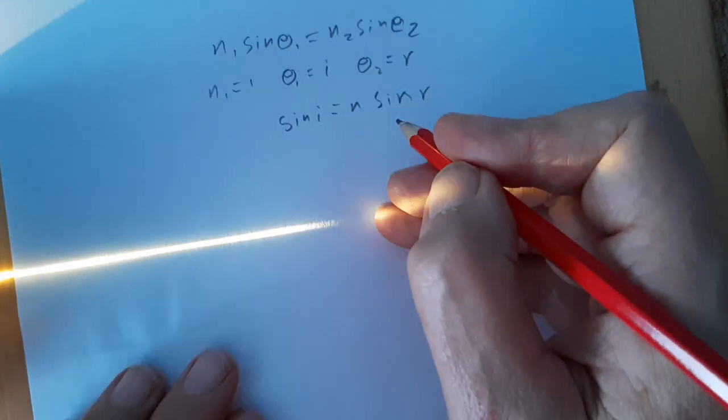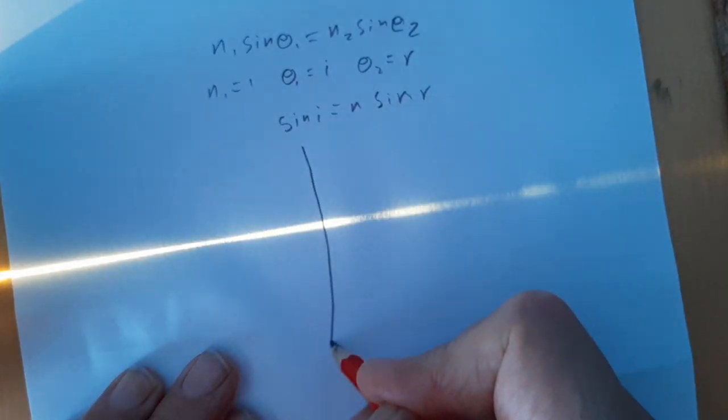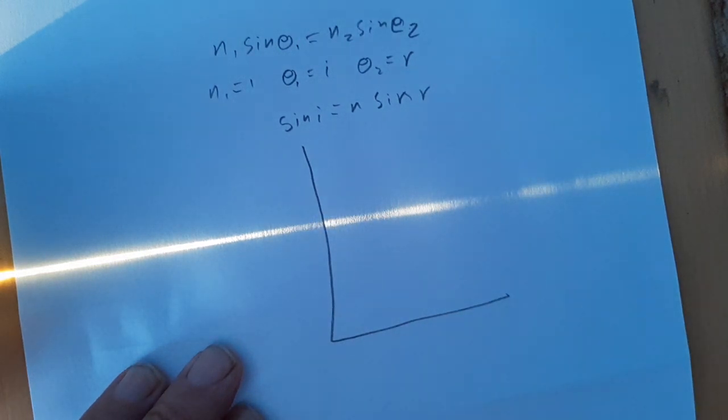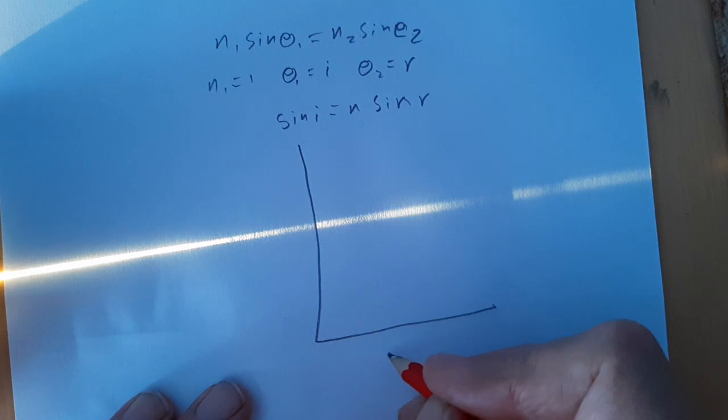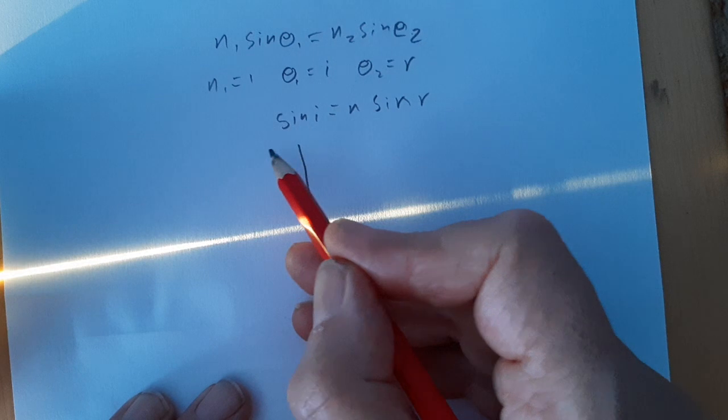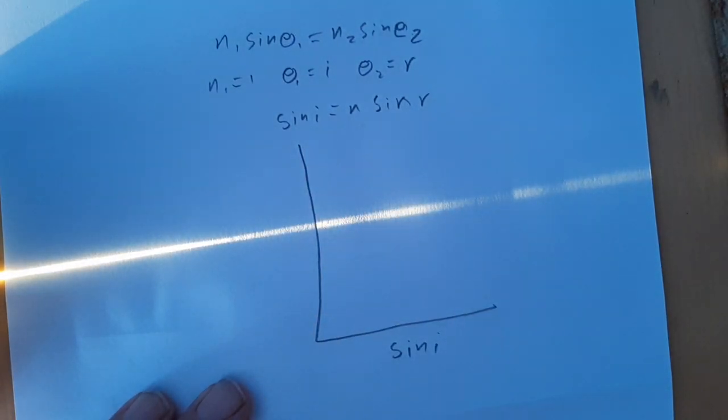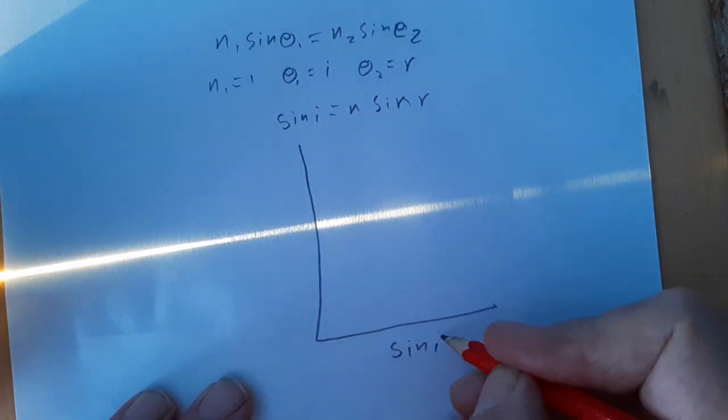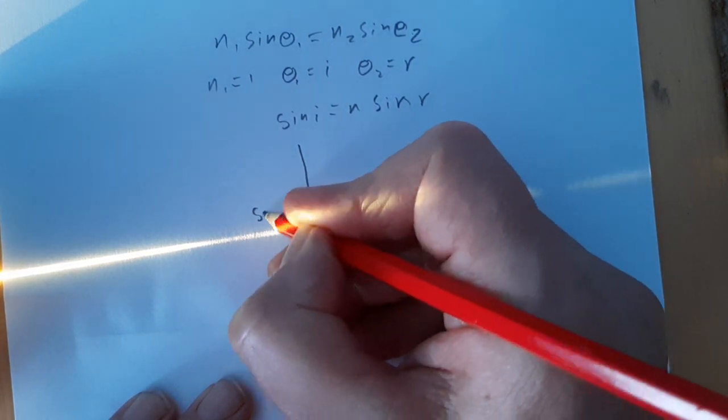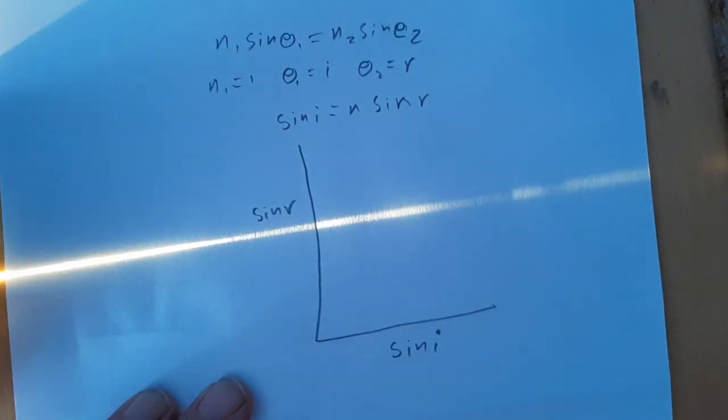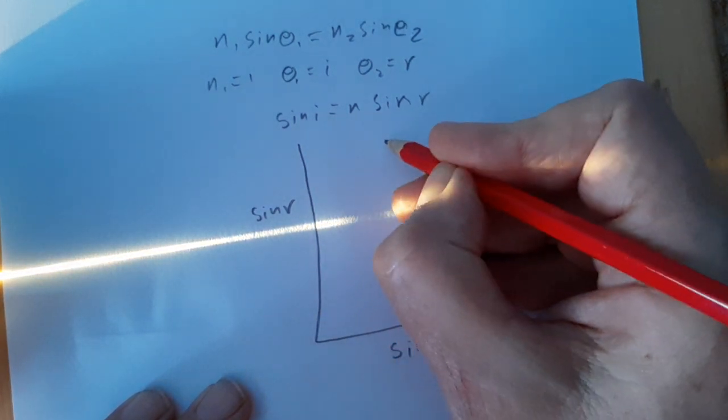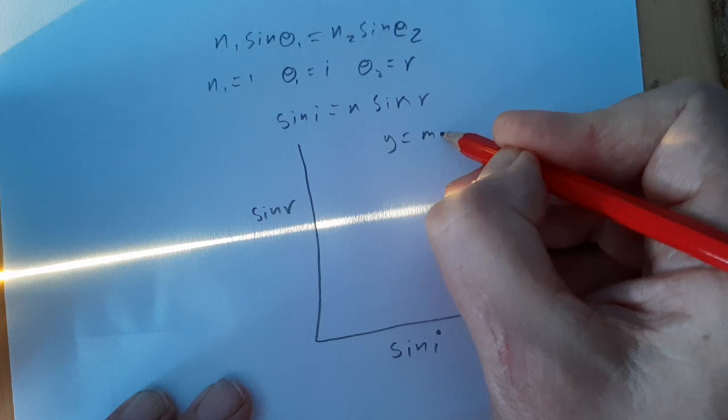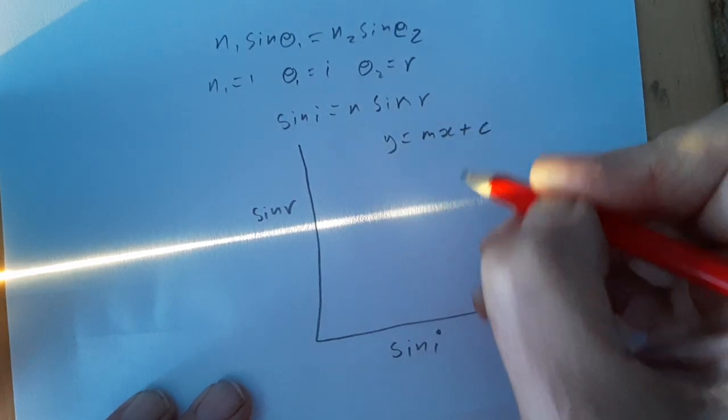And we're going to plot a graph. Let's think about what graph are we going to plot. Well, the graph we're going to plot. The angle we changed in this instance, wasn't it? Was the angle of incidence. We can't plot the angle itself because that's not proportional. But you can see sin I and sin R are proportional. So, sin I goes here and sin R goes there. That makes sin R the Y variable, doesn't it? So, you want to try and write this equation in the form Y equals MX plus C.